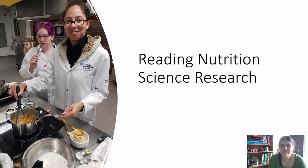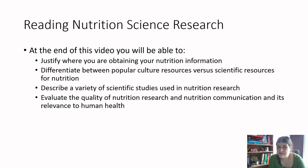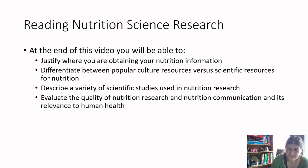We are back for part two of reading nutrition science research. The learning outcomes include: justifying where you obtain nutrition information, differentiating pop culture versus scientific resources, describing a variety of scientific studies used in nutrition research, and evaluating the quality of nutrition research and its relevance to human health. Today we'll really dig into the last two outcomes — describing study types and evaluating research quality. If you haven't watched the first video, I'd recommend starting there.